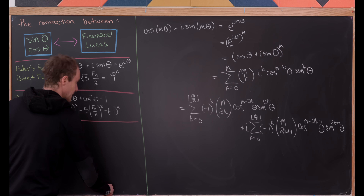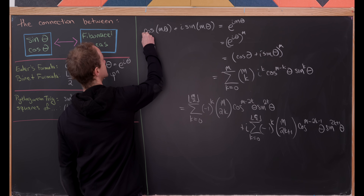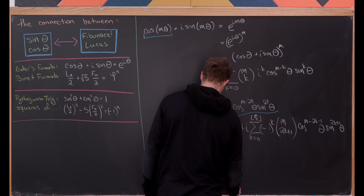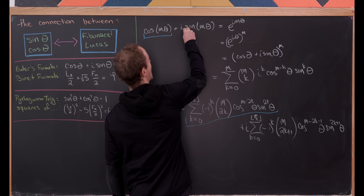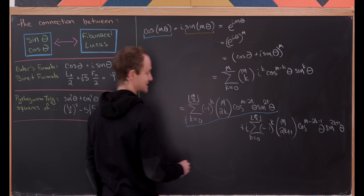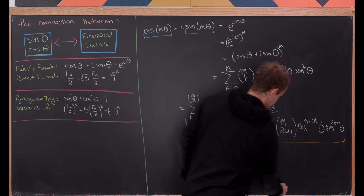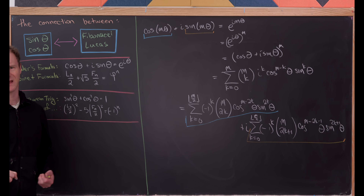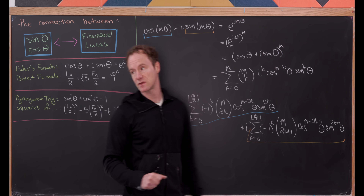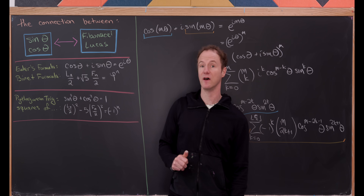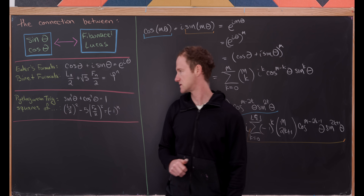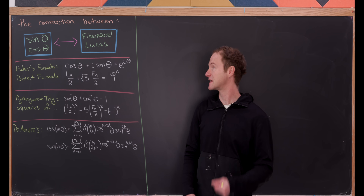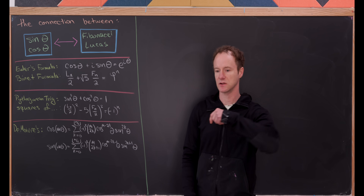Extracting the real part of both sides gives us cos(mθ) equal to that even sum, and extracting the imaginary part gives us sin(mθ) equal to that odd sum. We get nice formulas for cos(mθ) and sin(mθ) where m is a non-negative integer. Let's get those on the board and then look at the Fibonacci-Lucas version.